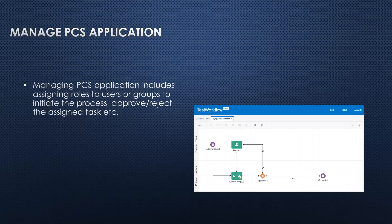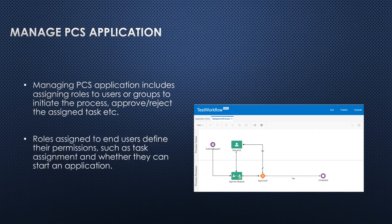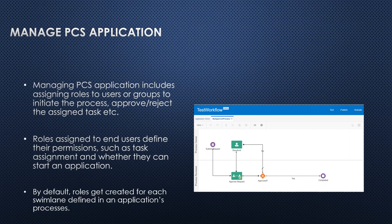Managing PCS application includes assigning roles to users or groups to initiate the process, approve or reject the assigned tasks, etc. The role assigned to an end-user defines their permissions such as task assignment and whether they can start an application or not. By default, roles get created for each swim lane defined in an application process.